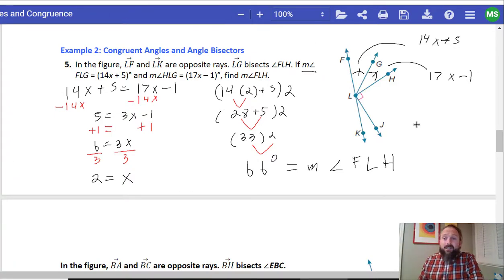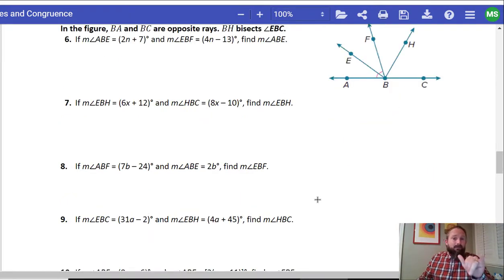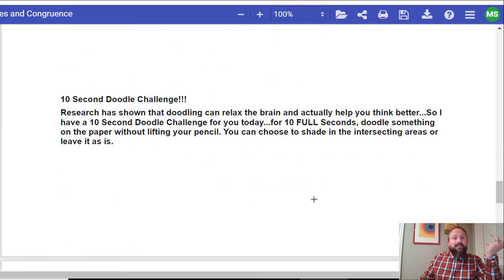Now what I want you to do is I want you to answer the rest of these questions and try your best making sure to figure out what is the relationship. If it's an angle bisector, meaning that they're equal to each other. What if we know that they are equal to 180 degrees? That sort of thing. Finally, at the last part here, I want you to do a 10 second doodle challenge. So if you want, we can start it right now. We're going to start it in 3, 2, 1. Go. All right guys. I hope you have a wonderful day and I'll see you tomorrow in class. Bye.